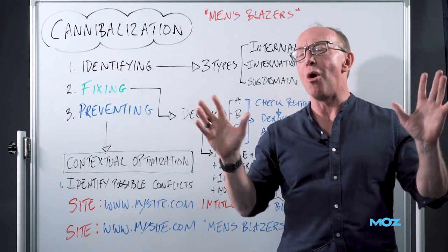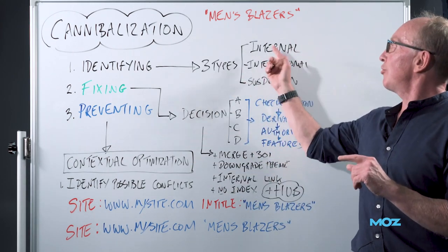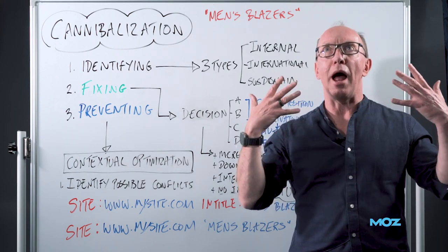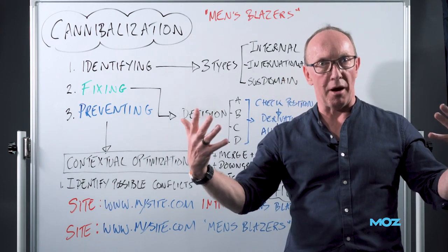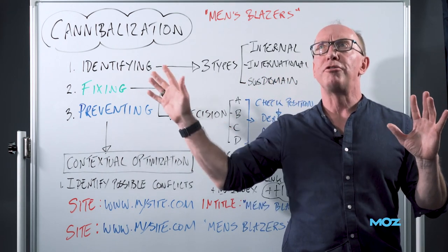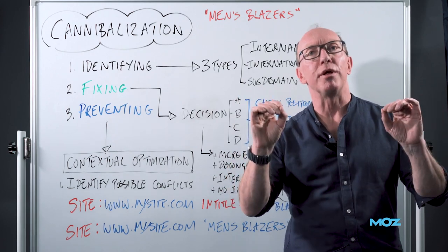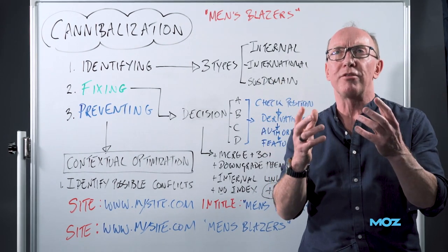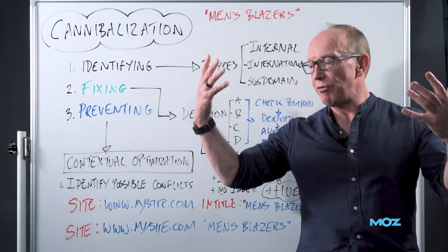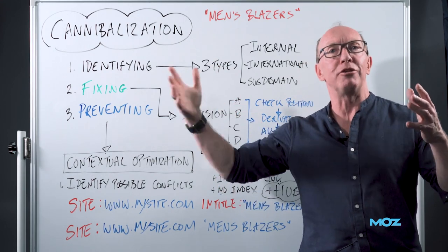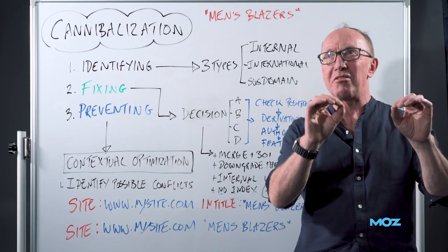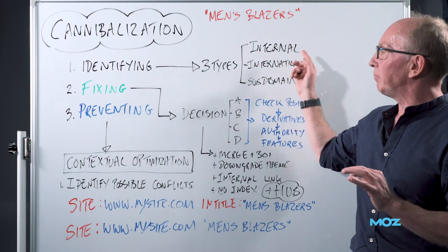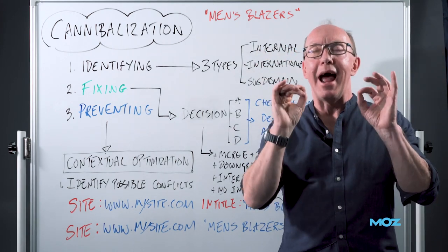So, cannibalization. There are three types — well, there are more, but three that we need to be aware of. The first is internal conflict, or cannibalization — I'll use those terms interchangeably — and that's where your content conflicts with itself. Then we have international conflict, which is dealt with by hreflang, so we'll keep that out of the mix. And then we have subdomain conflict, which will always happen — for example, if you have help.mysite.com with content similar to your main domain. But we're not going to talk about that today.